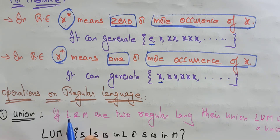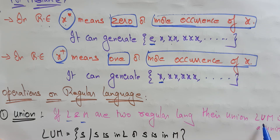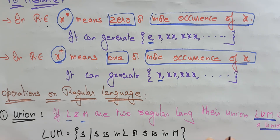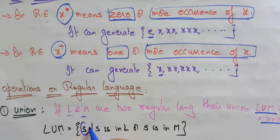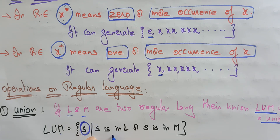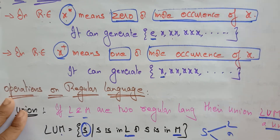Suppose you take two regular languages L and M. Their union, L ∪ M, represents a string S that is present in either L or M. So S is present in L or S is present in M — that is the union operation.